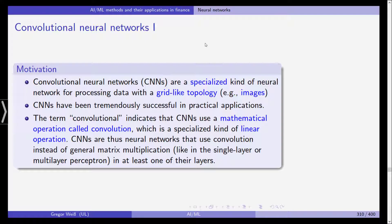Now why are they called convolutional? It indicates that CNNs use a mathematical operation called convolution, which is a specialized kind of linear operation. We don't need to go into the details of what a convolution is in mathematics, but they are neural networks that use a convolution instead of general matrix multiplication like in the single layer or multilayer perceptron.